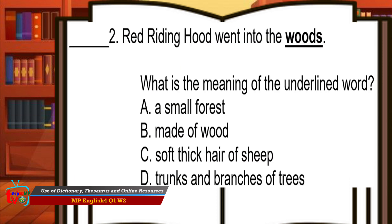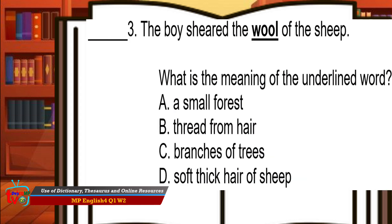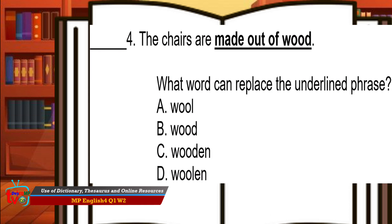Red Riding Hood went into the woods. What is the meaning of the underlined word? Correct! The answer is letter A — small forest. The boy sheared the wool of the sheep. What is the meaning of the underlined word? The answer is D. Amazing! The chairs are made out of wood. What word can replace the underlined phrase? Yes! The answer is letter C — wooden, because wooden can be another term for the phrase made out of wood.